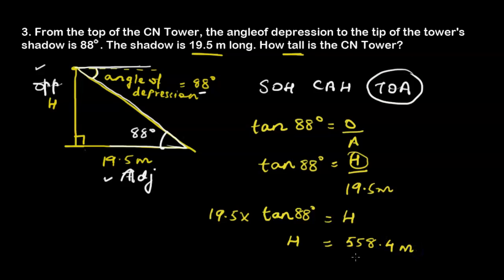Since no specific rounding was requested, the height of the CN Tower is 558.4 meters. That's how we solve all word problem and application problems in trigonometry. We understand the word problem, convert it to a diagram, check which trigonometric ratio applies to the known and unknown sides, then apply the ratio and solve for the unknown value.